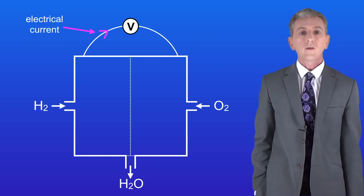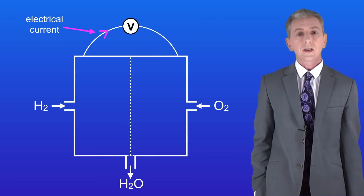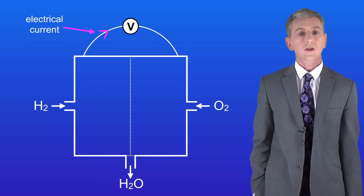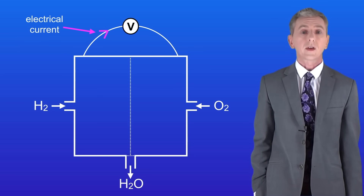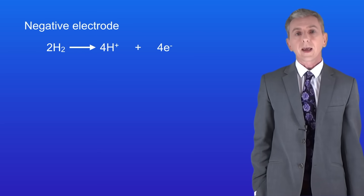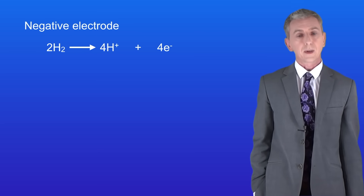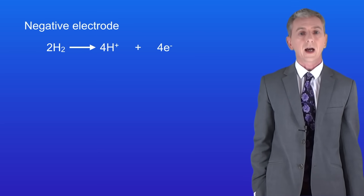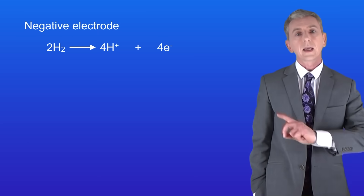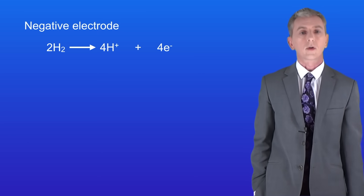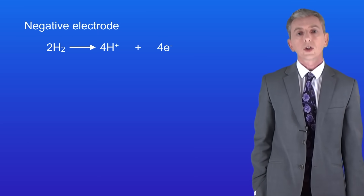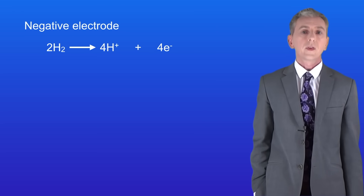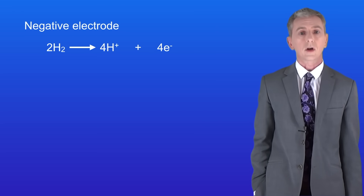If you're doing the higher tier then you need to be able to write half equations for the reactions at the negative and the positive electrodes. At the negative electrode, hydrogen molecules split into hydrogen ions and electrons. The half equation for the negative electrode is: 2H₂ → 4H⁺ + 4e⁻. These electrons now pass through the wire and that's our electrical current.